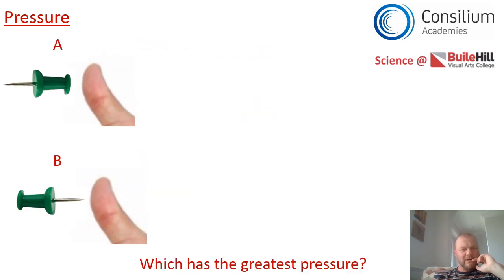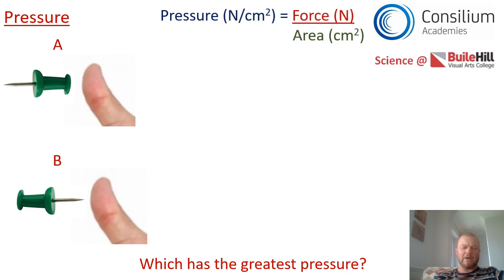Here are two situations, we've got A, we've got B, we've got a larger area, we've got a smaller area, but which one has the greatest pressure? We've already seen that pressure has got something to do with force and the area over which that force is applied, and the equation that we use is pressure equals force divided by area. Force is measured in newtons and area is centimetres squared in this lesson.